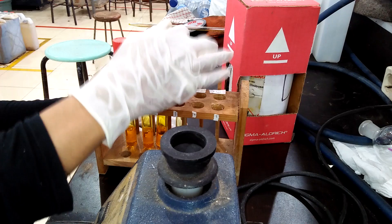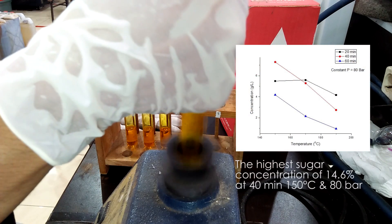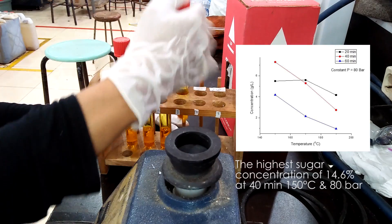In subcritical water treatment, the highest sugar concentration of 14.6% at 40 minutes, 150 degrees Celsius, and 80 bar.